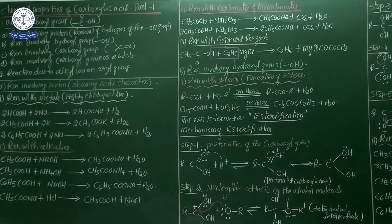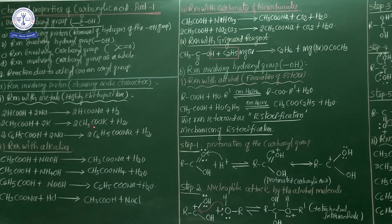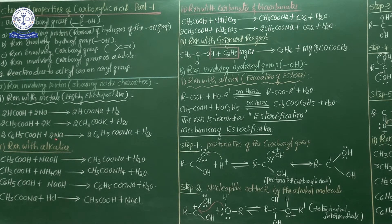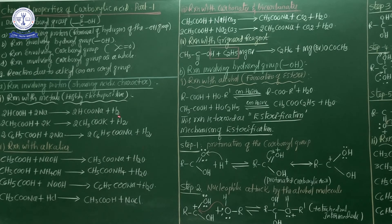Second example: 2CH₃COOH + 2K → 2CH₃COOK (potassium acetate) + H₂. Potassium removes the hydrogen, so this reaction belongs to reactions involving proton. Potassium acetate is formed and hydrogen gas is liberated. And: benzoic acid treated with sodium gives sodium benzoate and hydrogen gas is liberated. Reactions with metals: hydrogen gas is liberated and salt is formed. This belongs to reactions involving proton from the carboxylic acid group.